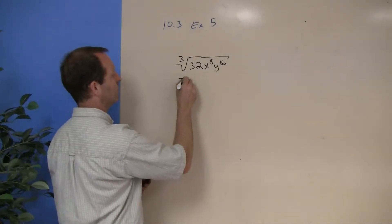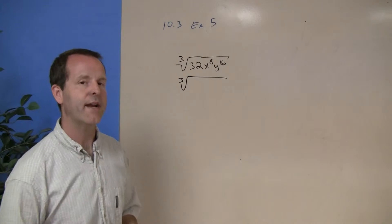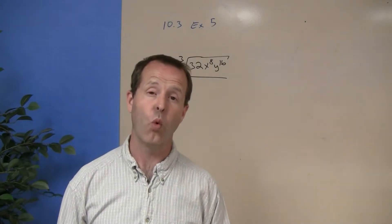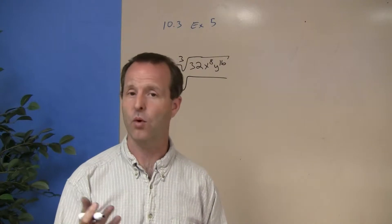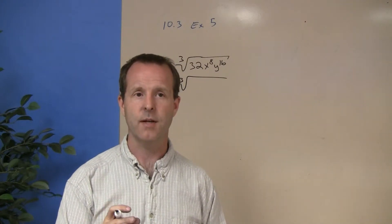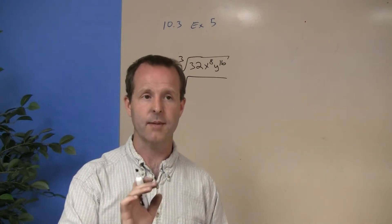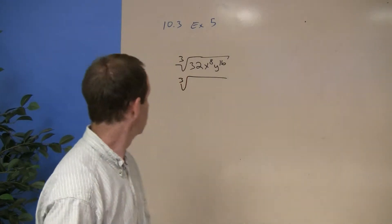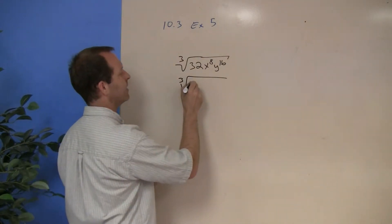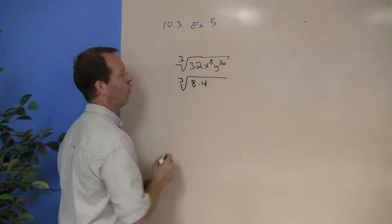So I'm going to have the cube root. 32, what's a way to factor 32 so that one of the factors is a perfect cube? Perfect cubes were 1, 2 times 2 times 2 is 8, 3 times 3 times 3 is 27, 4 times 4 times 4 is 64. Okay, I'm at 32, so I'm going to make it as an 8 times a 4.